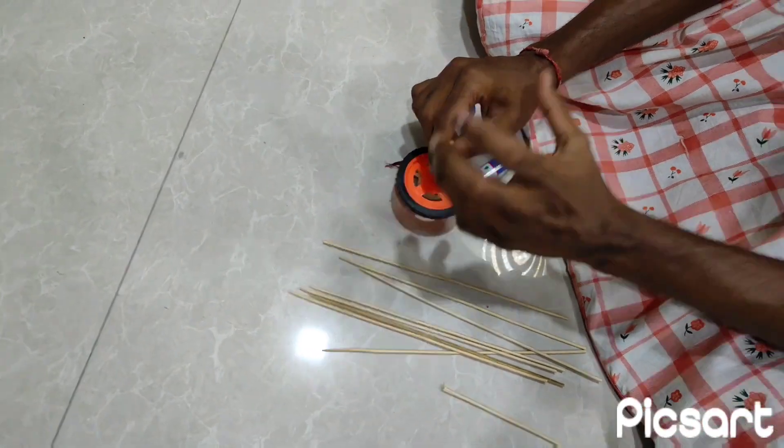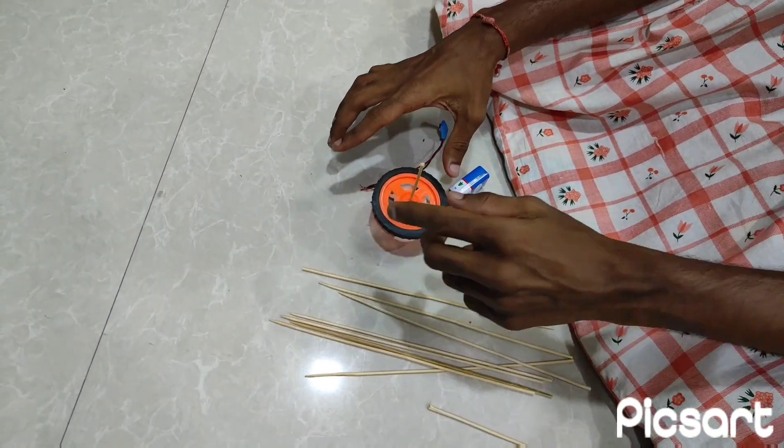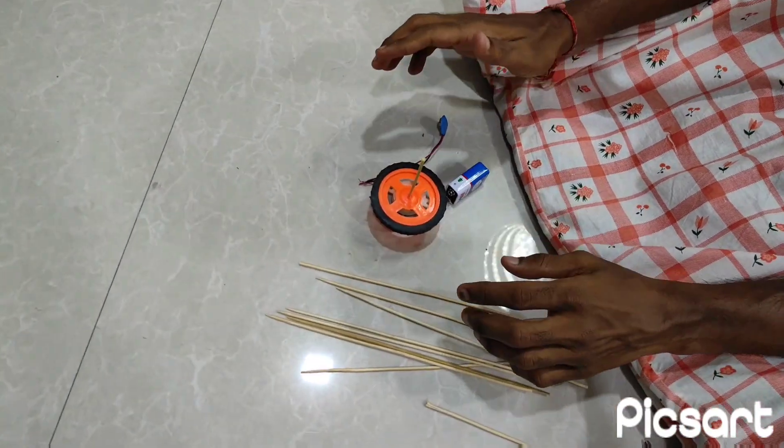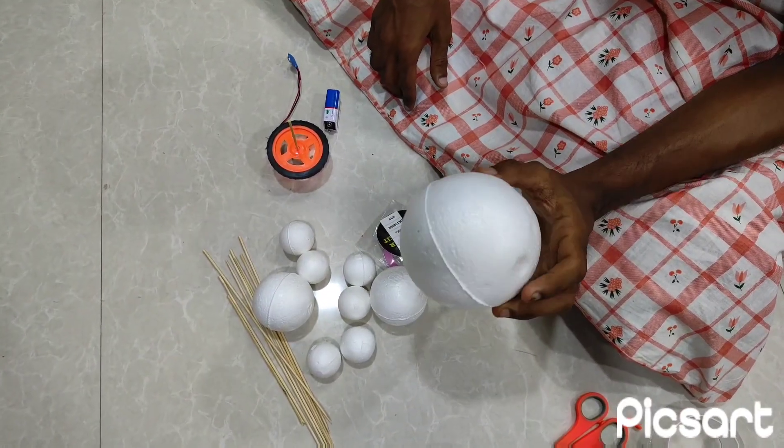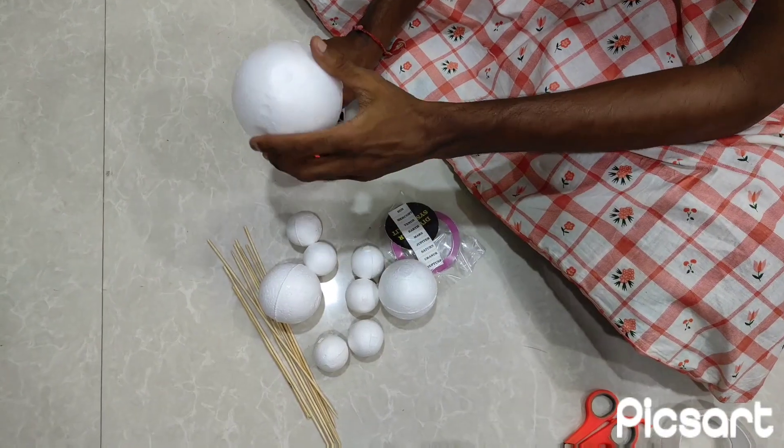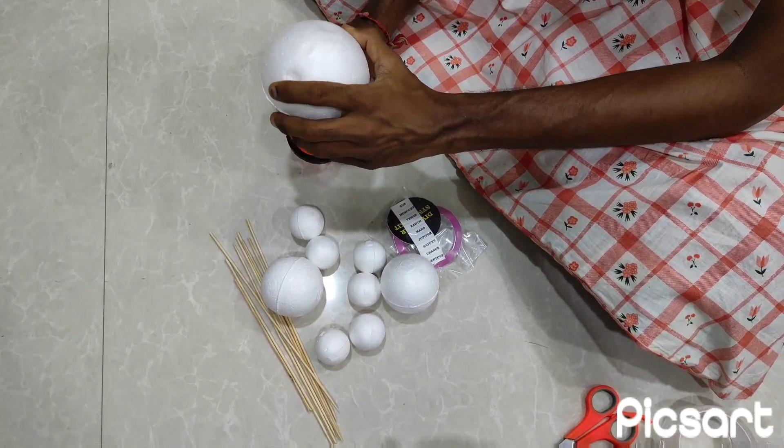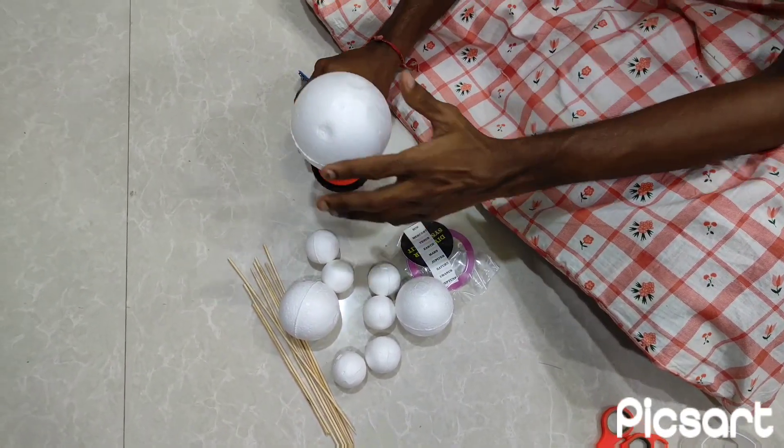Here I will insert the sun ball, so this will rotate. Now insert the first bigger size ball. This is sun, so we will insert in the center. Now it is placed.